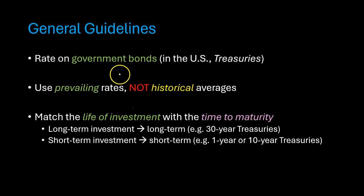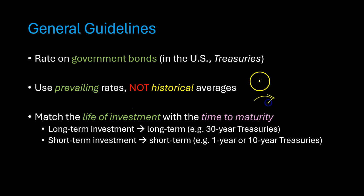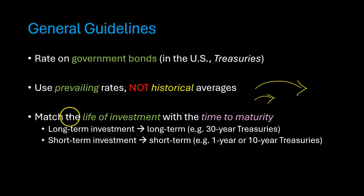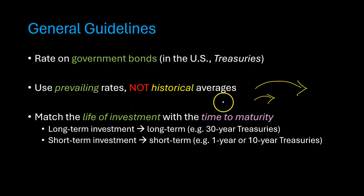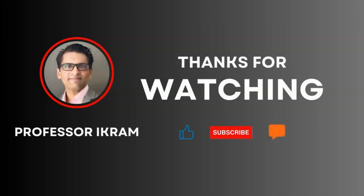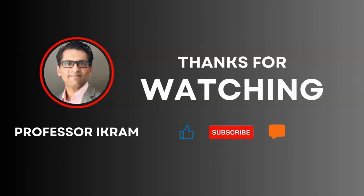Again, notice that our perspective is forward-looking. We're thinking about what rate of return equity holders could have earned risk-free over the next 5 years or over the next 30 years, depending on what kind of project they are funding today. So all else equal, we want to match the life of the investment with the time to maturity. This is how you want to think about estimating the risk-free return to plug into the capital asset pricing model to estimate cost of equity or cost of debt. If you found this video useful, click the like button and subscribe to the channel, and feel free to ask any questions using the comment section. Happy learning!